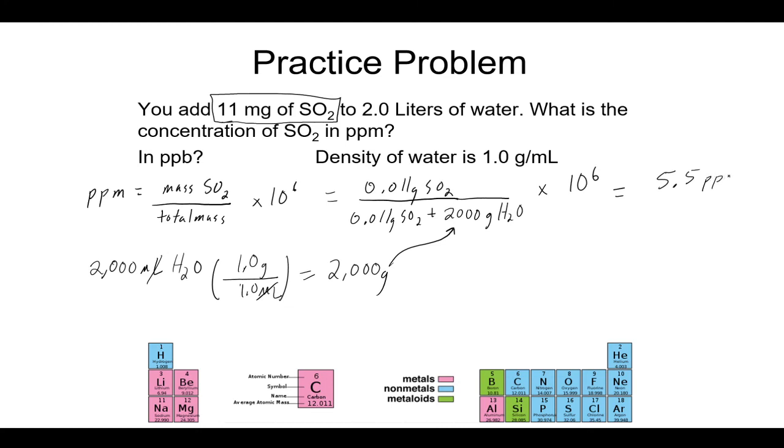parts per million. I keep track of my sig figs here. I started with 2 sig figs and 2 sig figs. So, I'm going to report 2 in my final answer. My answer here would be 5.5 ppm. I'm also asked to convert this to parts per billion. And parts per billion, the only thing that changes is this ppm is a ppb and the 10 to the 6 is a 10 to the 9. Everything else stays the same.